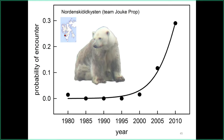Another example of long-term monitoring is from my colleague Jauke Propp, who already started in 1979 on another place on Spitsbergen. There were hardly any polar bears in the area — I was there in 1986 and we didn't even have a gun, there were no polar bears. But in 2002 it started to change, and now he has different polar bears visiting every three days. Really a big change, partly related to climate change because the ice is going away.